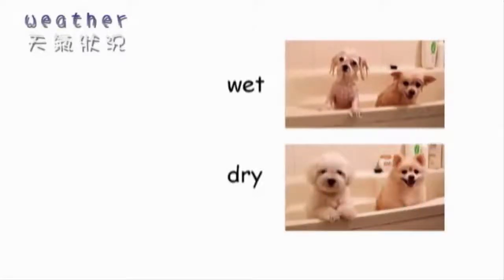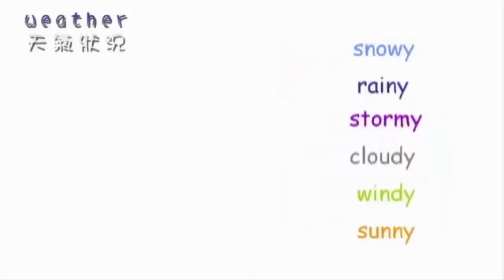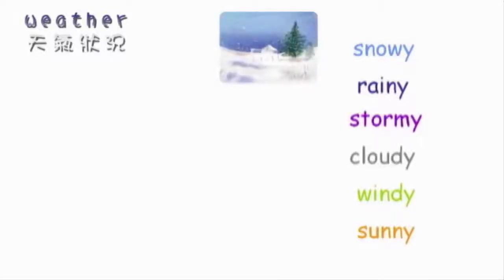這兩個形容詞是跟濕度有關：wet（潮濕的），dry（乾燥的）。這六個形容詞是說明各種天氣的情況：snowy（下雪的）。